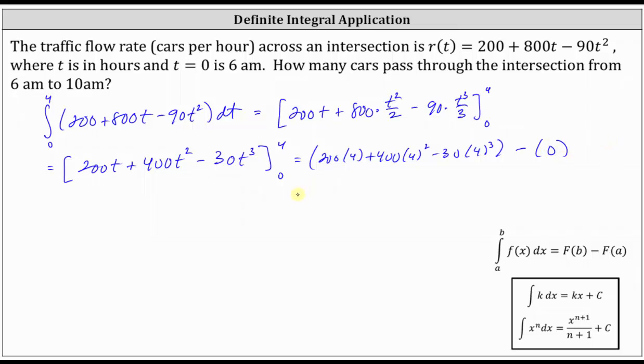Simplifying, 200 times four plus 400 times the square of four minus 30 times the cube of four is equal to 5,280. So now we know 5,280 cars pass through the intersection from 6 a.m. to 10 a.m.